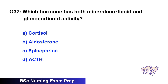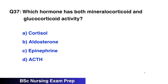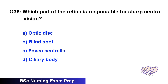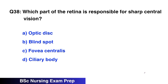Question number 37: Which hormone has both mineralocorticoid and glucocorticoid activity? The right option is A, cortisol. Question number 38: Which cell of the retina is responsible for sharp central vision? The right option is C, fovea centralis.